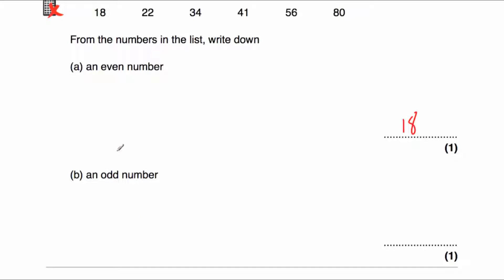Part B says: write down an odd number. Well, there is only one odd number in the list. An odd number ends in either a 1, 3, 5, 7, or 9. So 41 is odd, so we're going to write that down: 41.